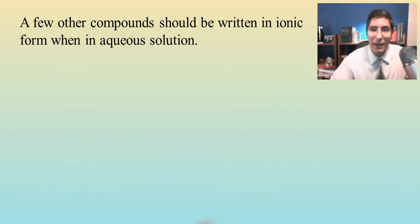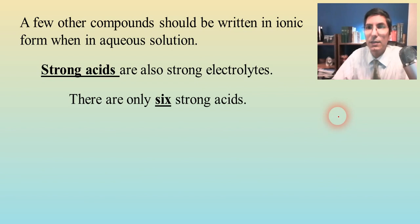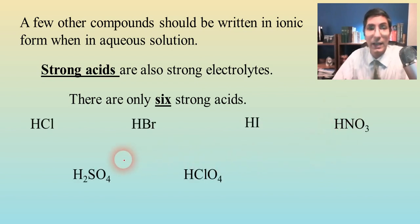Now, there are a few other compounds other than soluble ionic compounds that need to be written in their dissociated form, their ion form, when they're in aqueous solution. And probably the most common example of those would be strong acids. Strong acids are also strong electrolytes. Now, earlier in this course, we learned that compounds whose formulas start with hydrogen generally can be assumed to be acids. Well, of all those acids out there, and there are hundreds, maybe thousands of acids that exist, strong acids, there are only six of those. So it's easy to learn what those six strong acids are.